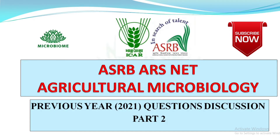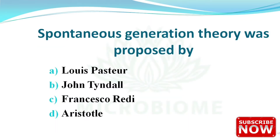The first question is: spontaneous generation theory was proposed by whom? The options are Louis Pasteur, John Tindall, Francisco Redi, and Aristotle. The right answer is option B — Aristotle.